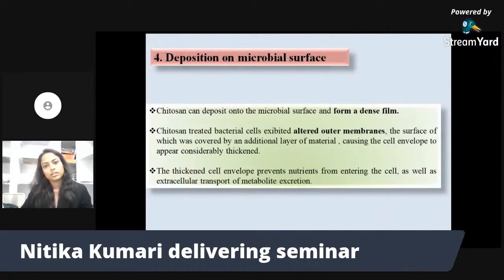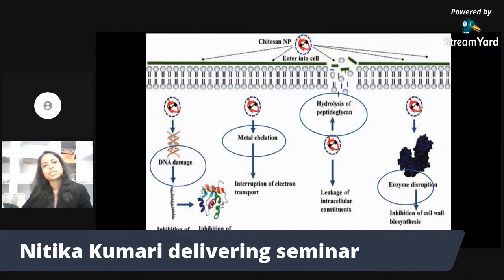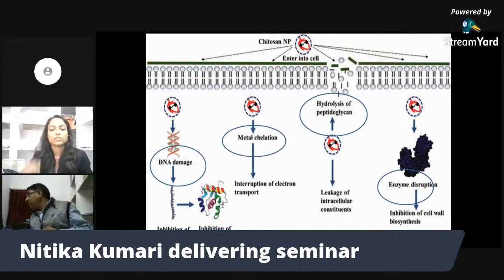Regarding deposition on microbial surfaces, Chitosan is able to deposit on the microbial surface. This leads to thickening of the cell wall, and the essential nutrients required for the growth and development of the pathogen are no longer able to enter or exit the cell wall. This creates a disadvantageous condition for the pathogen. The picture indicates how Chitosan acts on DNA as well as through metal chelation and hydrolysis of peptidoglycan disruption, which are toxic to the pathogen.